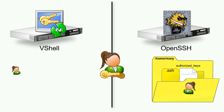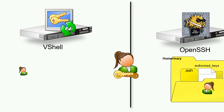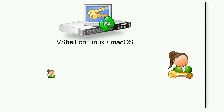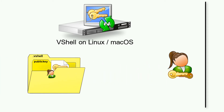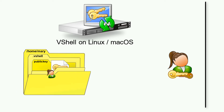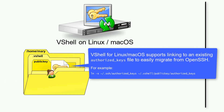In VanDyke Software's Secure Shell server named vShell on macOS, Linux, and other Unix operating systems, a Public Key is associated with a corresponding user account by placing the Public Key file into a Public Key folder inside a folder named .vShell within the user account's home folder. In addition, vShell supports linking to an existing authorized_keys file within this folder if you have already configured Public Keys for use with OpenSSH on the same system.